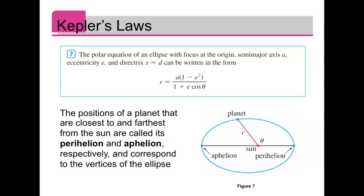So this is the polar equation of an ellipse with the focus at the origin, semi-major axis a, eccentricity e, and directrix x equals d is written in that form that we just noted. And then just a couple of astronomical terms.